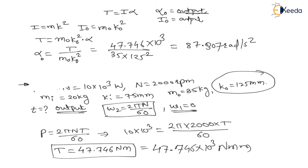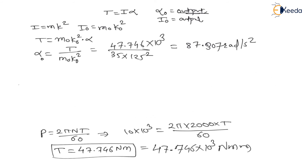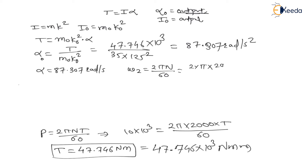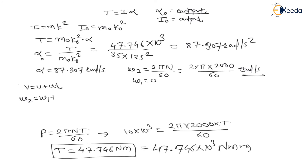So the angular acceleration of the output shaft is α = 87.307 rad/s². The final angular speed is ω₂ = 2πN/60 = 2π × 2000 / 60 rad/s, and initial angular speed ω₁ = 0. Using the kinematic equation for angular motion: ω₂ = ω₁ + αt.